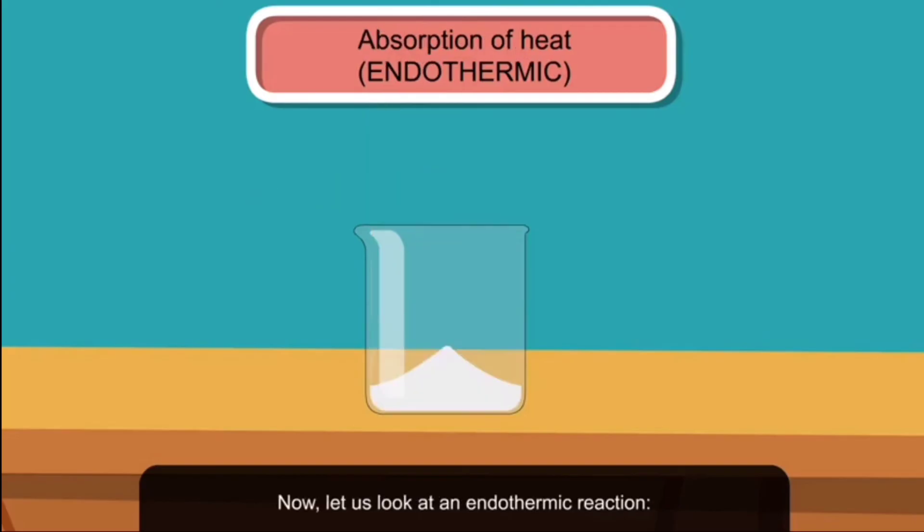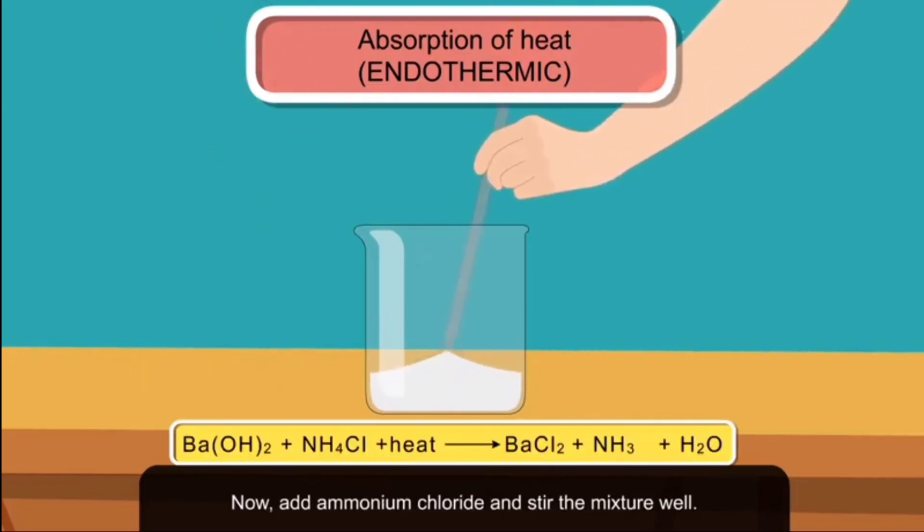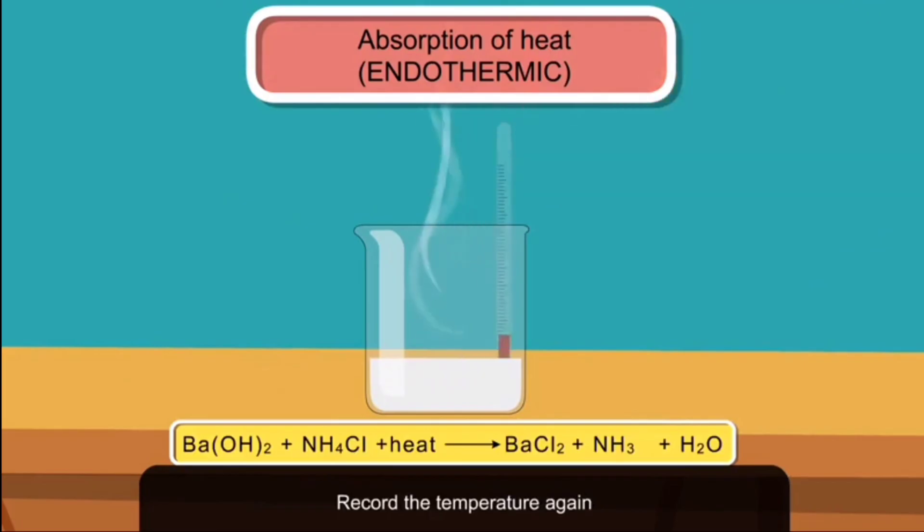Now let us look at an endothermic reaction. Take some barium hydroxide powder in a beaker and record its temperature using a laboratory thermometer. Now add ammonium chloride and stir the mixture well. Record the temperature again. The temperature would have fallen considerably. The beaker would feel very cold to touch.